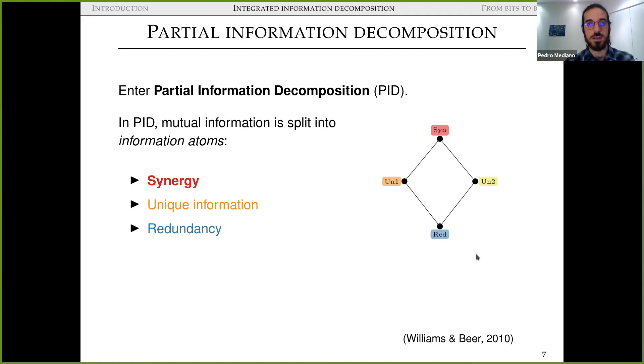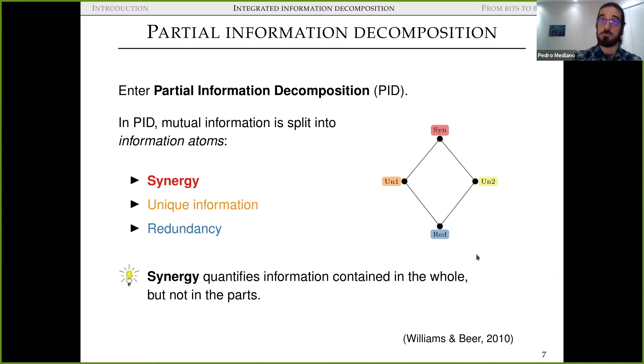And of these, basically the one that we are most interested, in particular in the context of IIT, is synergy, which essentially quantifies information that's contained in the whole, but not in the parts. And to give a quick example of how to conceptualize these things, one very quick example is to think of the two eyes as sources of visual information about the world. In this context, for example, information about color would be redundant, because if you close one eye or the other, you can still see color, therefore it's redundant. But synergy would be, for example, information about depth, where if you close either eye, you lose it. And it's only by having both of them that you can perceive information about depth, by and large.